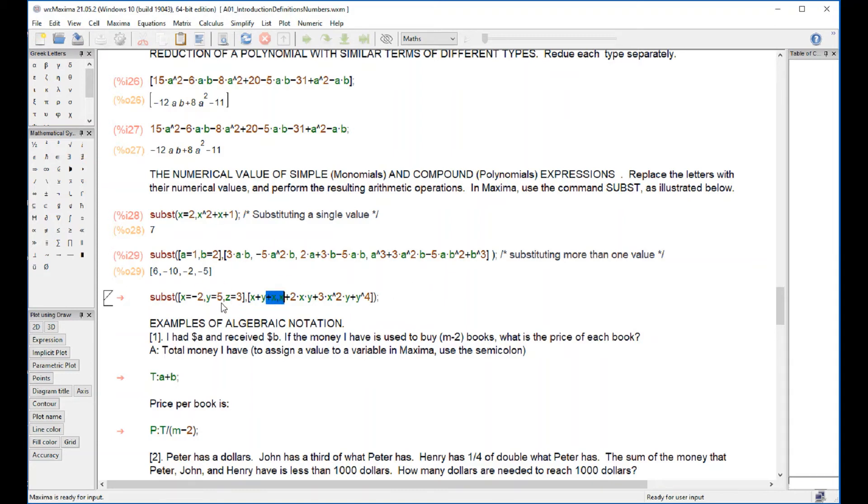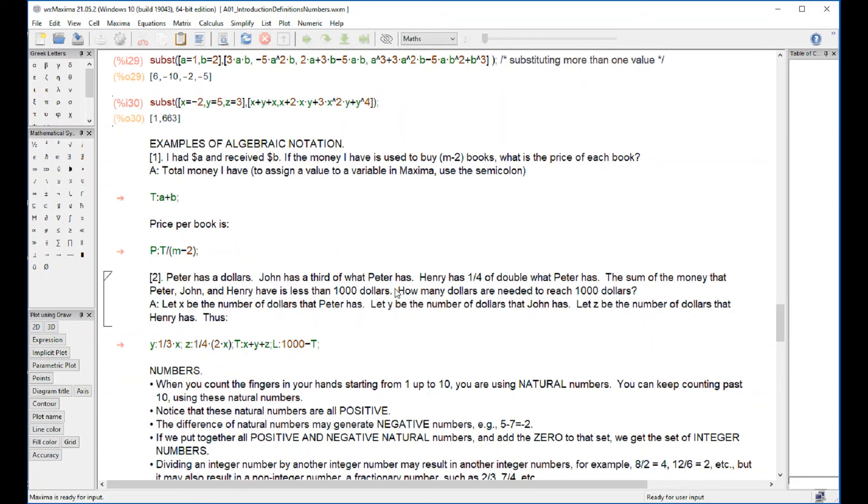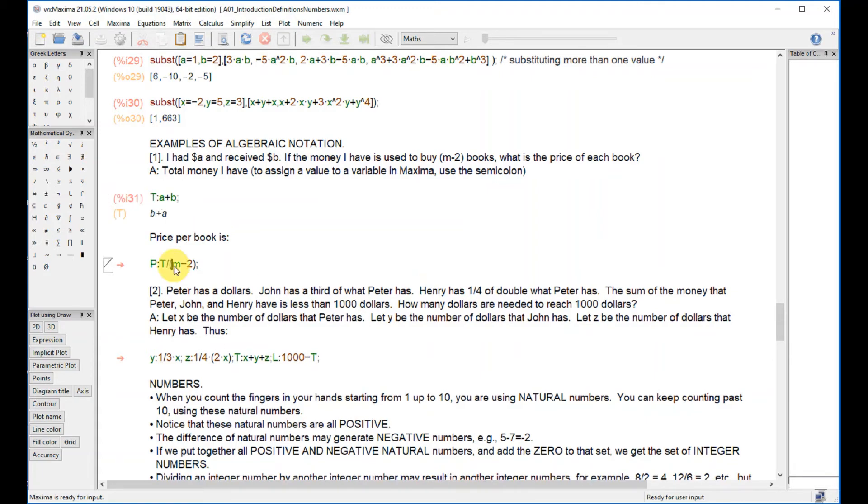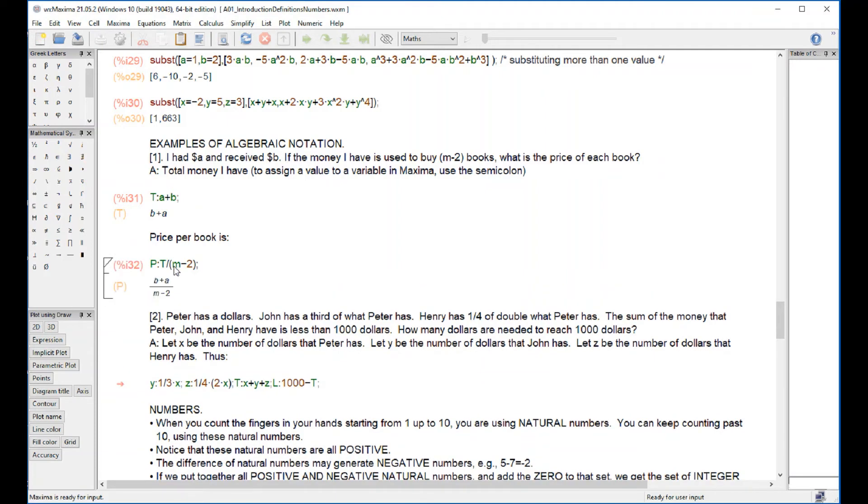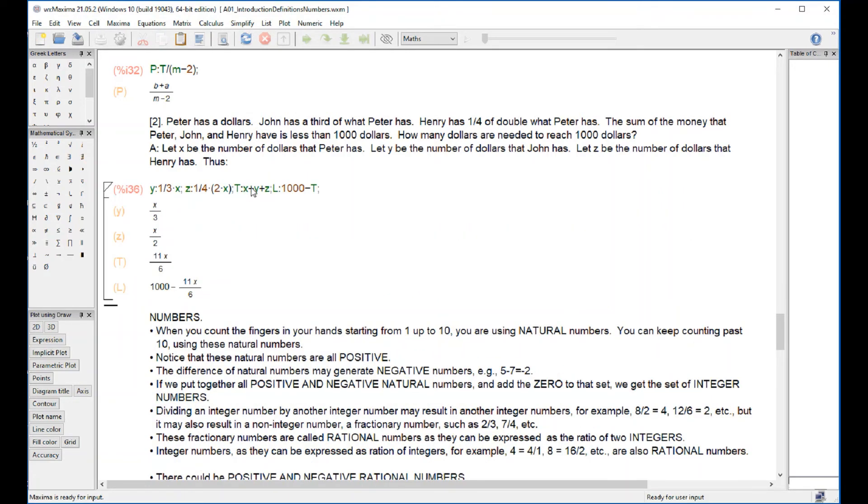Here you have two terms in the right-hand side, three terms in the left-hand side x, y, and z, and that will give me that numerical replacement. Algebraic notation: if I have a dollars and receive b dollars and use the money to buy a - 2 books, what is the price of each book? The total amount of money will be a + b dollars, and the price of each book will be (a + b)/(a - 2). This is algebra - the ability to express quantities in letters. Here's another example that you want to try on your own.